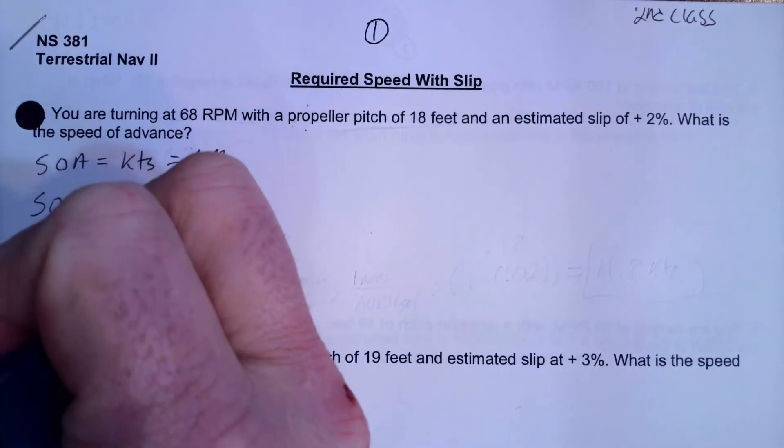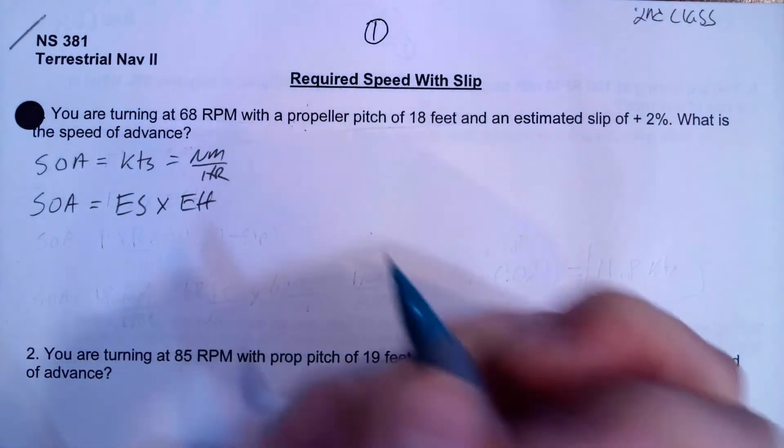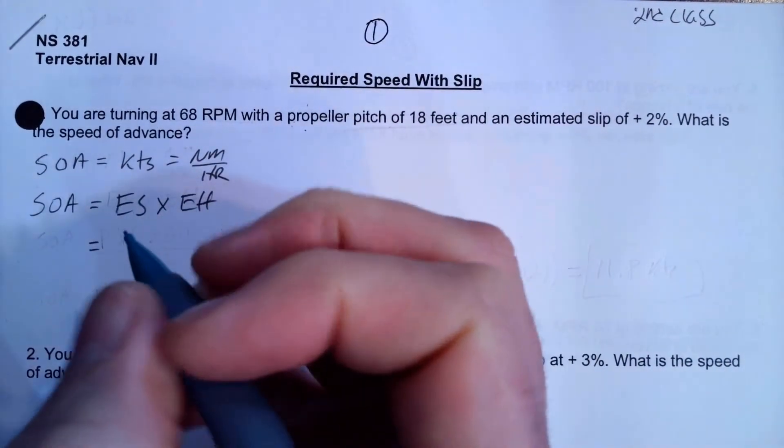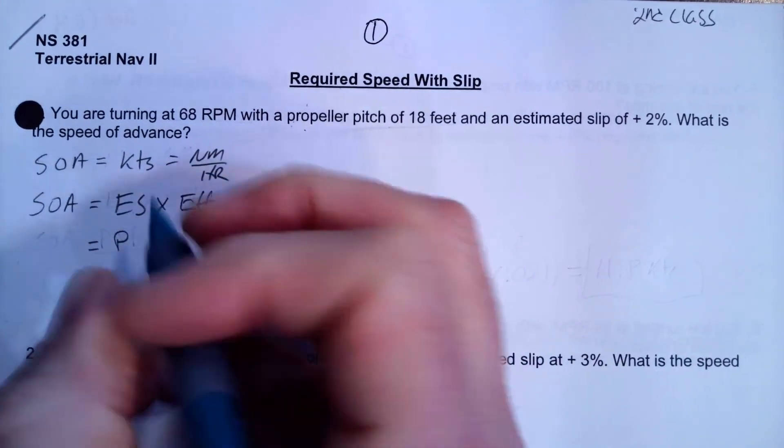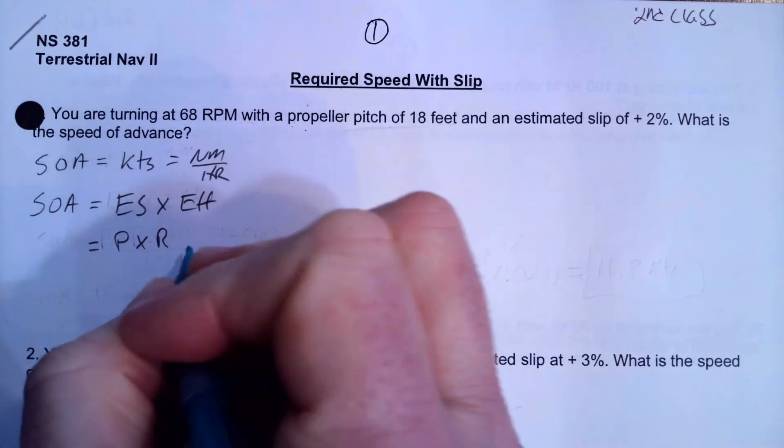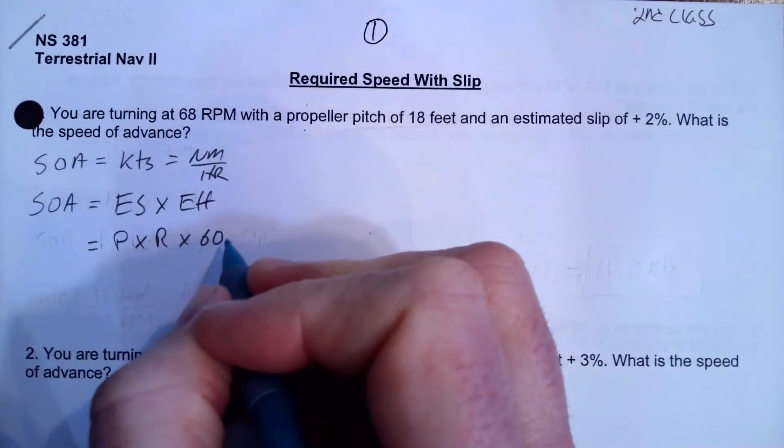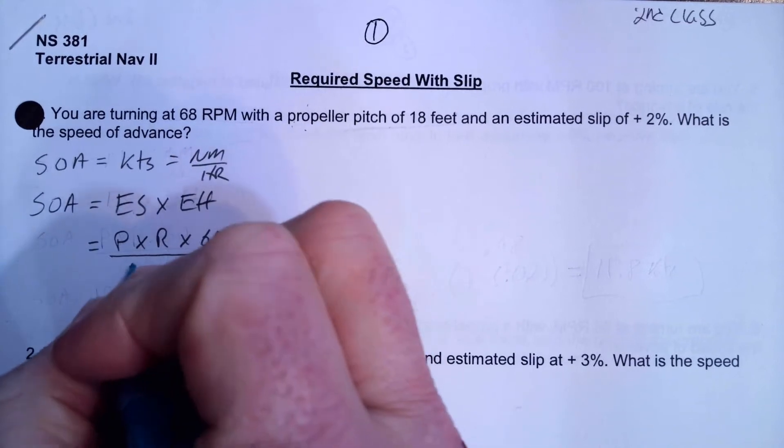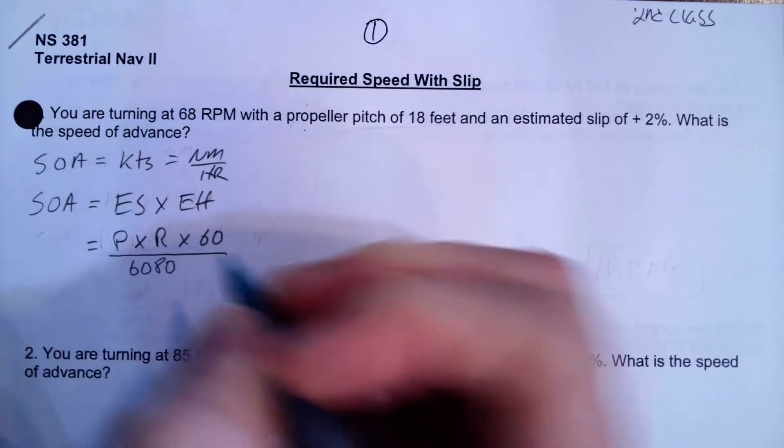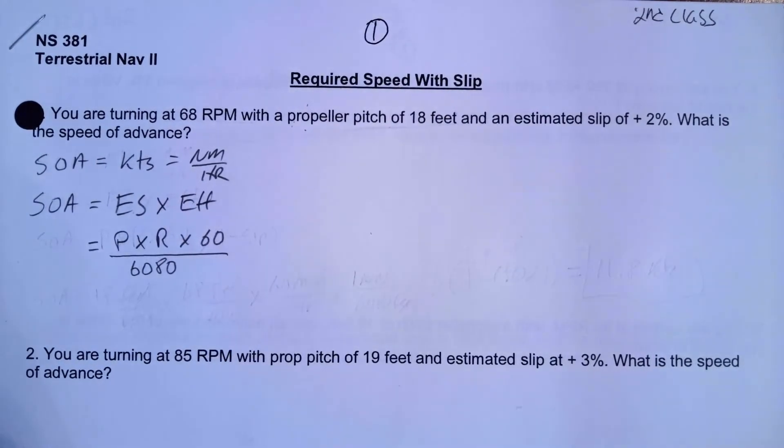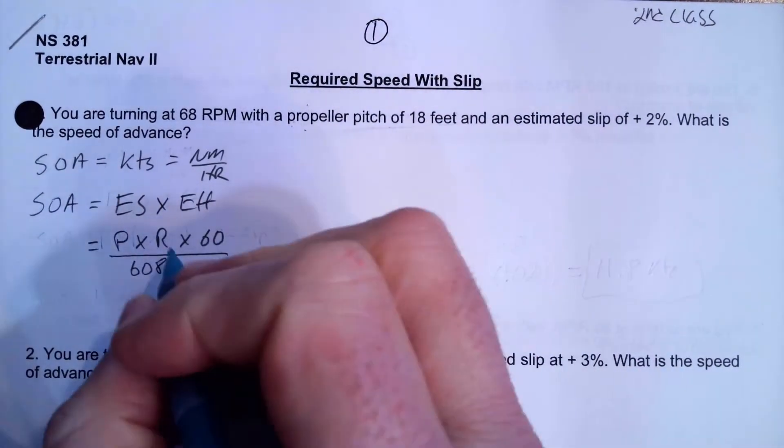So what is our engine speed formula? Well, in another video we derived that, but that's basically going to be the propeller pitch times the RPM times a conversion factor, which is 60 minutes per hour, and divided by another conversion factor, which is 6,080 feet per nautical mile.